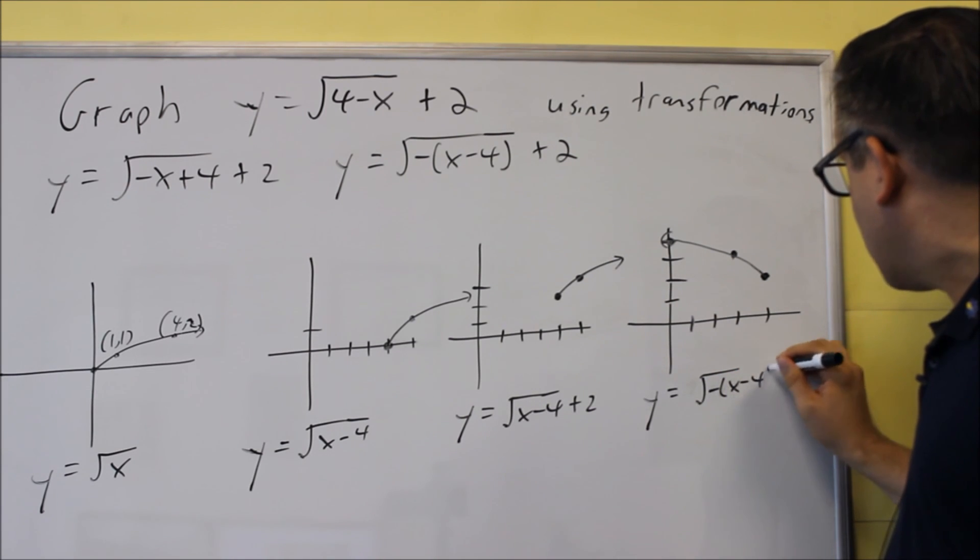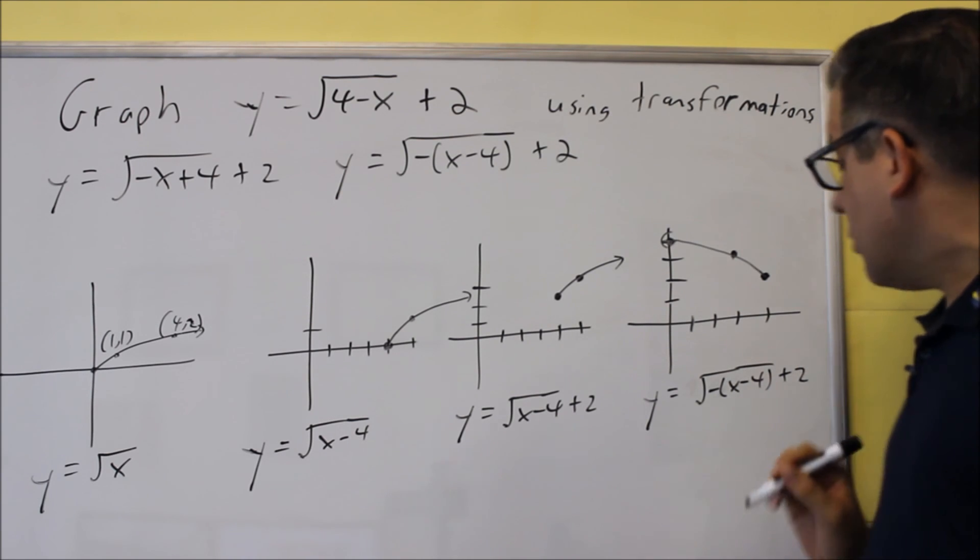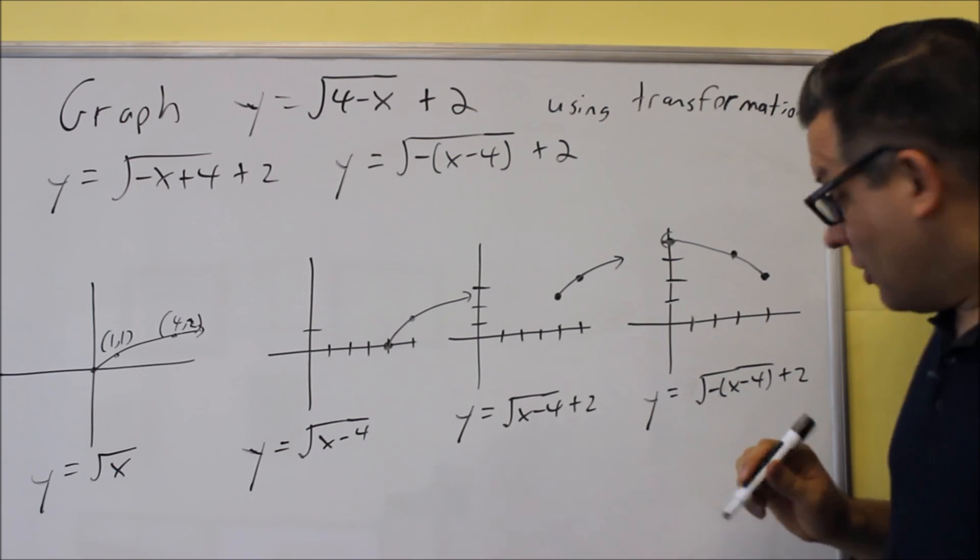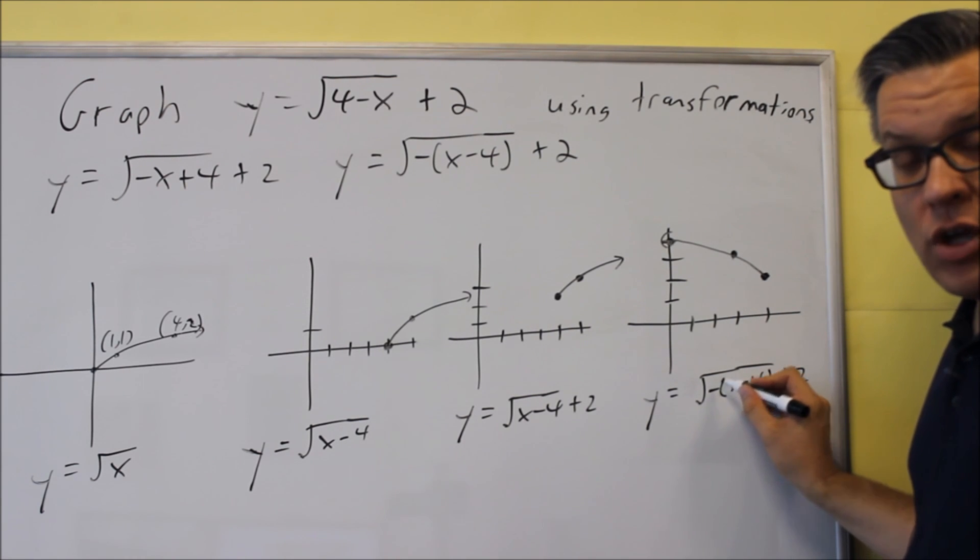The one that we graphed was the final one because this is the one where we're applying the negative. So, negative 1 on the inside, x minus 4, plus 2. So, again, the reason why it now opens up to the left is mainly because of the negative that we have on the inside.